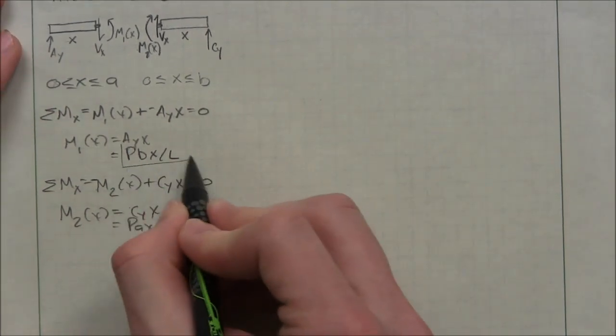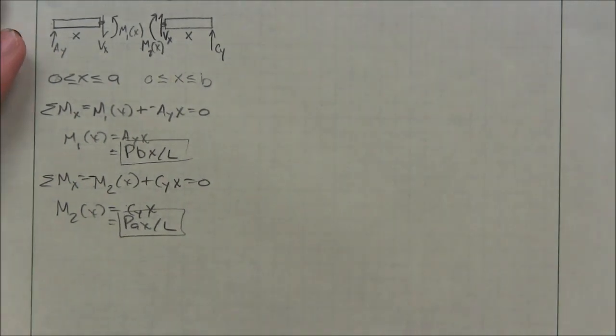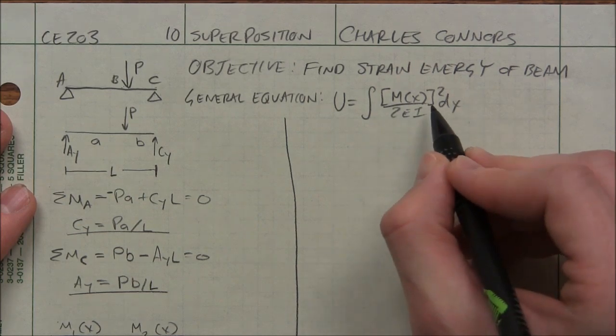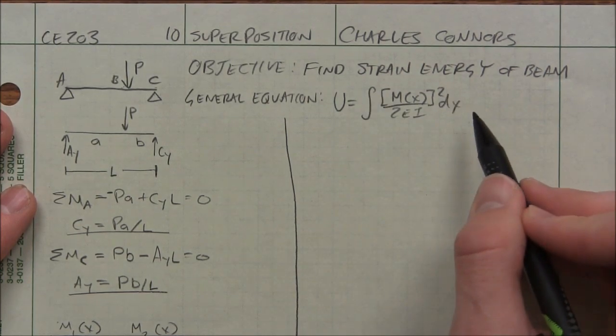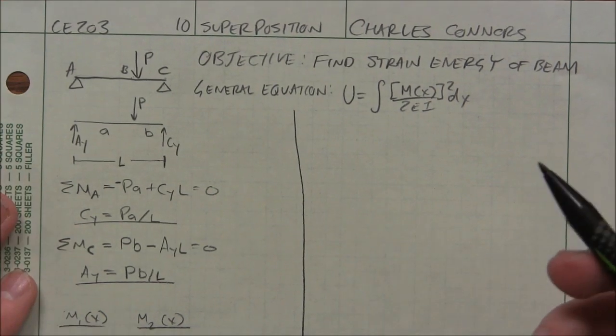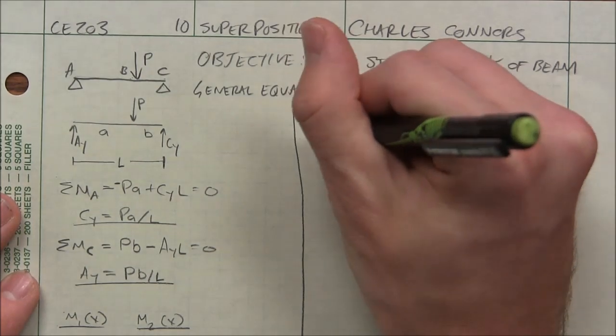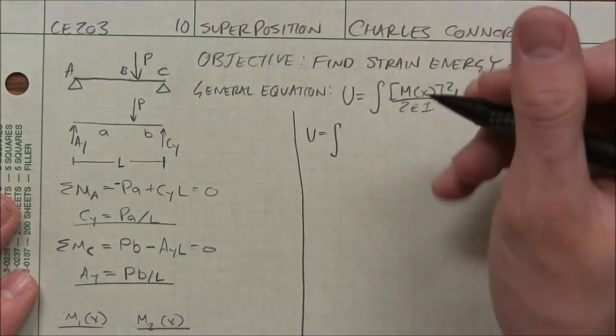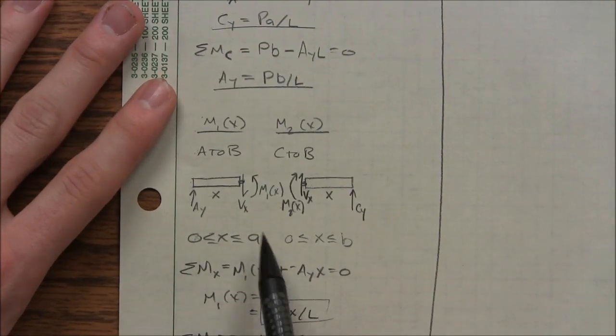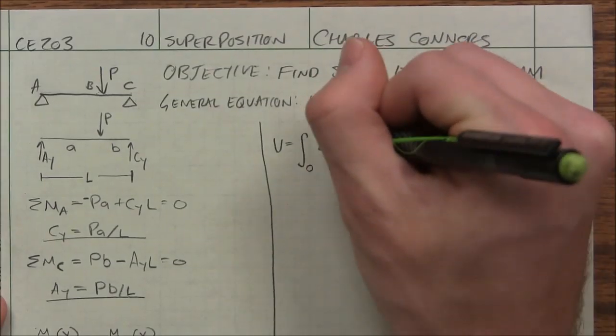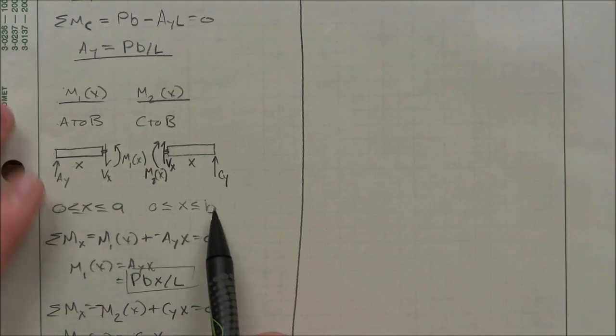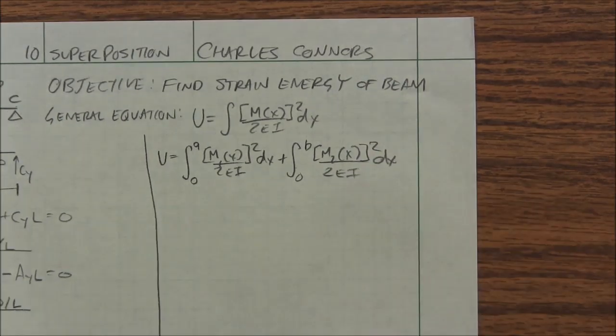So now I have my M1 equation, my M2 equation. We can set up our integral now. So since we have two different M equations, I'm not going to stick both of them under one integral. I have to split it up into two different integrals since we have two different limits of integration. It's going to look something like this. So for M1, our limits, we said they were zero to A. So I'm going to put that right here. Plus our limits were zero to B.